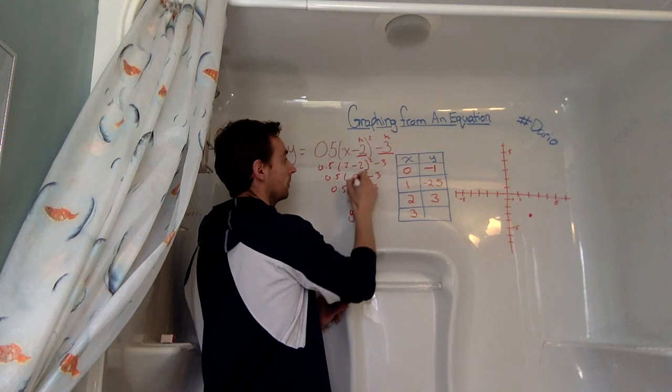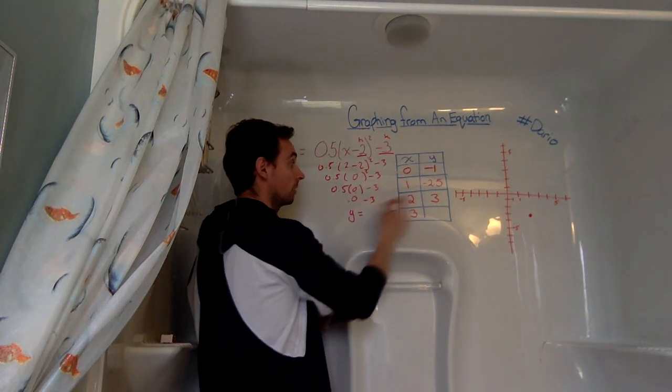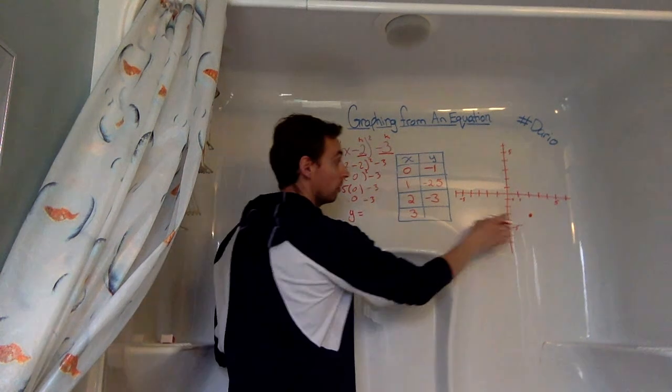2 minus 2 is 0. 0 squared is 0. 0 times 0.5 is 0. 0 minus 3 is negative 3. So our vertex holds true, which is perfect.